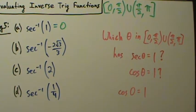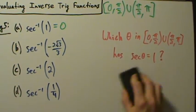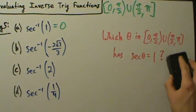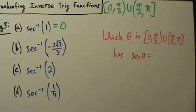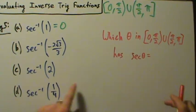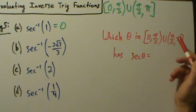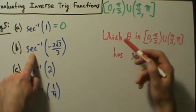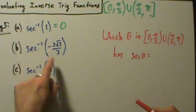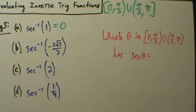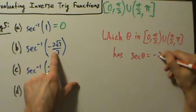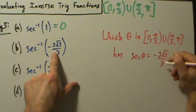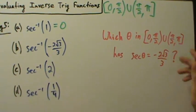Now let's do part B. We ask ourselves the exact same question but with a different number: which theta inside the range of the inverse secant function has secant of theta equal to negative 2√3 over 3?